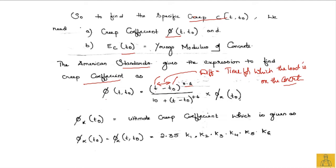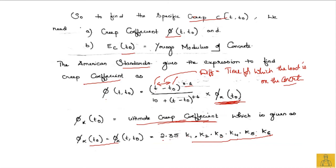φ∞ is the ultimate creep coefficient, given by: φ∞ = 2.35 × k1 × k2 × k3 × k4 × k5 × k6. These six coefficients take into account various parameters to give an accurate result. The ultimate creep coefficient relates to the ultimate creep, while the formula finds the creep coefficient for time t rather than infinity.